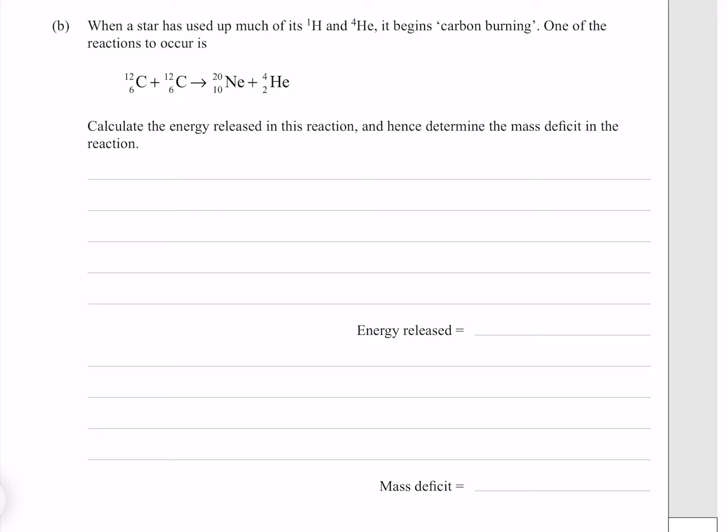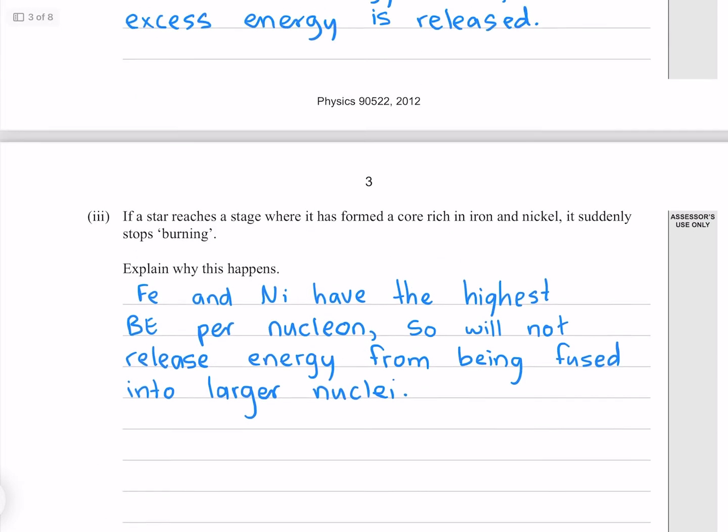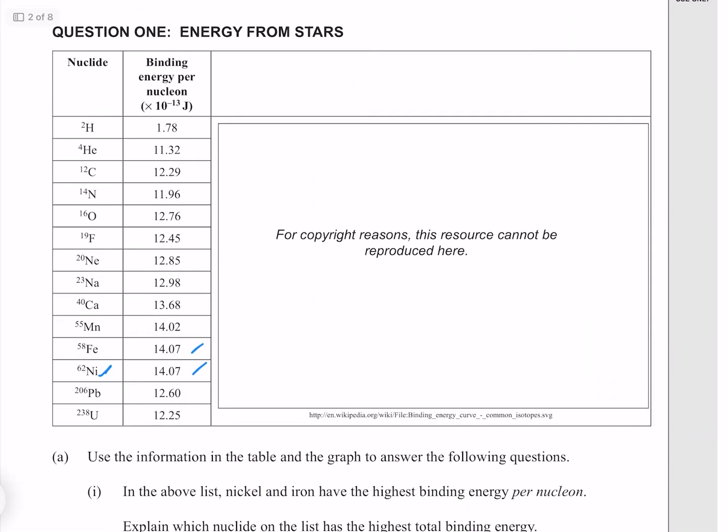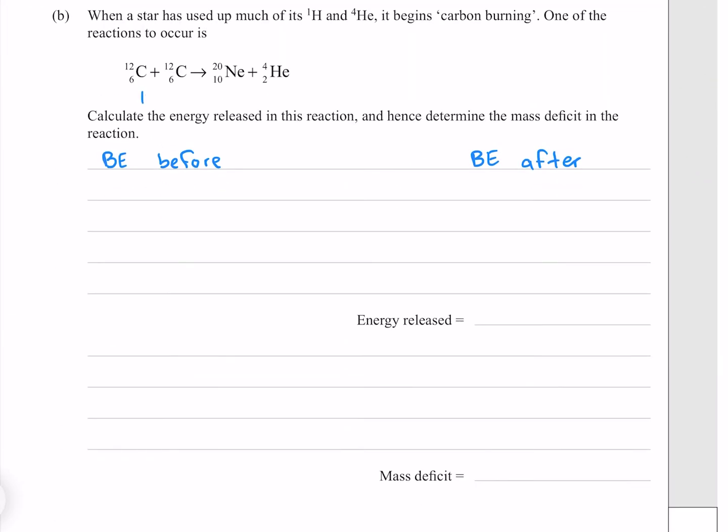For this we need to determine the difference in our binding energy. From up here we can get our binding energies per nucleon. For carbon it's 12.29, for neon it's 12.85, and for helium it's 11.32, all times 10 to the minus 13 joules. For our binding energy before, we have two carbon atoms. Their binding energy per nucleon is 12.29, and the amount of nucleons in each is 12, and we have two of them, which gives me 294.96 times 10 to the minus 13 joules.